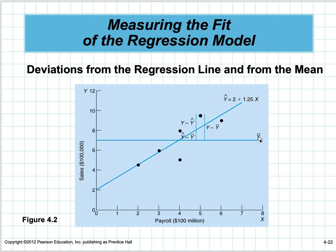For a point at x = 5, the distance from y-bar to the predicted y-hat is (y-hat minus y-bar). Then from the regression line to the actual point is (y minus y-hat). And the total distance is (y minus y-bar).